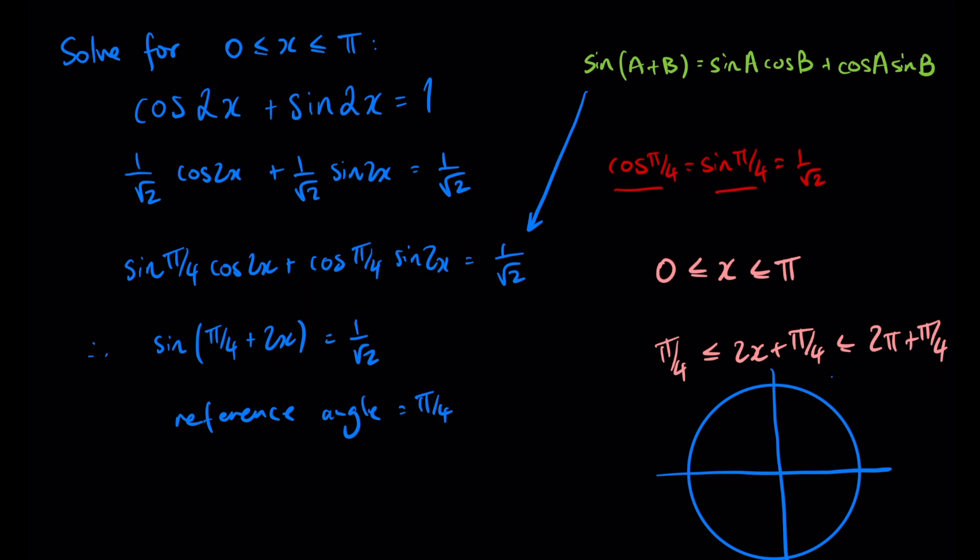Let's draw that in, π on 4, and we are going to have all the solutions where sine is positive, so that's in the first and second quadrants.